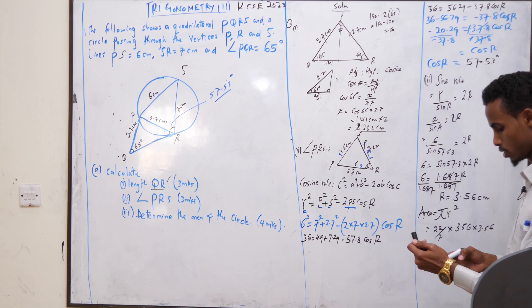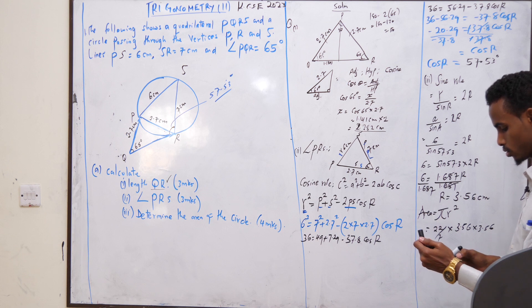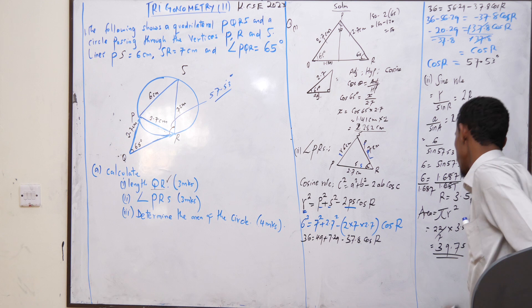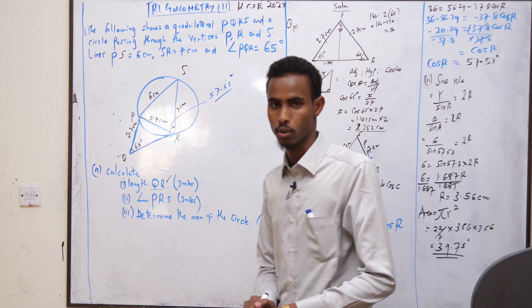It becomes 22 over 7 times 3.56 times 3.56, squared times 22 out of 7. It becomes 39.75. The area is now 39.75 square centimeters. And that is the final of the question.